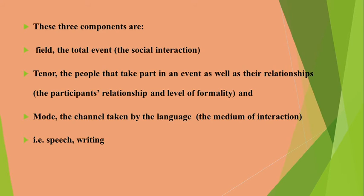These are the three parameters or components of register: field, tenor and mode. Field means the total event, the social interaction or social condition in which we use language. The second component, tenor, means the people that take part in an event as well as their relationships — in simple words, the participants' relationship and level of formality. The third parameter, mode, means the channel taken by the language. We have discussed earlier the two modes: speech and writing. These are the three parameters we use in a particular register.